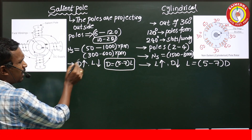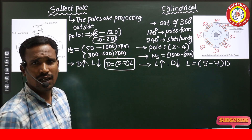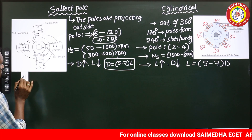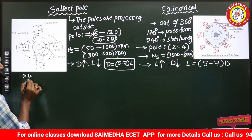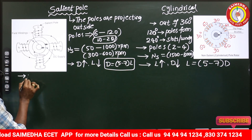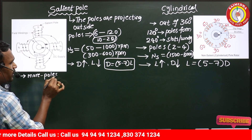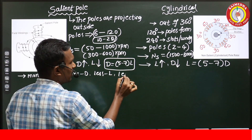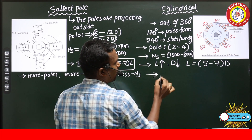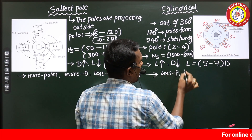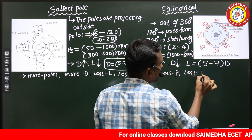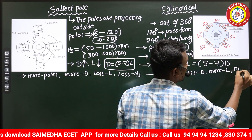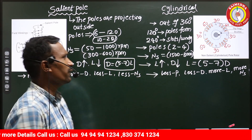When the diameter is more, the speed of the machine reduces; when the diameter is less, the speed increases. So for the salient pole: more number of poles, more diameter, less axial length, and less speed. For the cylindrical type: less number of poles, less diameter, more axial length, and more speed.